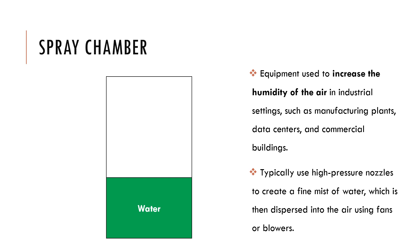In this lecture, we'll be discussing a certain kind of equipment — spray chambers — which are used to increase the humidity of air, or simply humidification of air. We discussed certain practical scenarios where we have to increase or decrease humidity, such as in printing operations, in museums to preserve arts, and in certain cases where you need to stop static electricity from forming. You can go back to the first lecture or search the internet to learn more about applications of humidification operations.